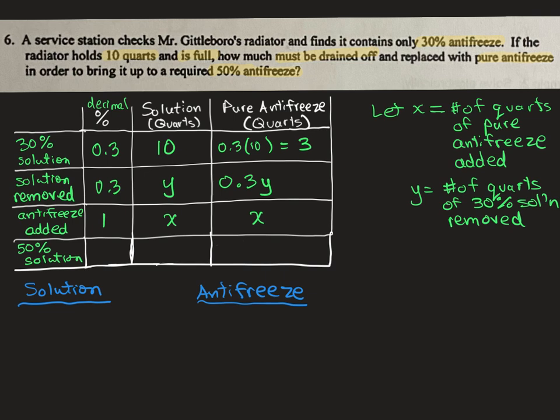Then finally, we're sitting at our 50% solution after we added that antifreeze. So the percent would be 0.5. And the solution, the amount or quarts of solution would be 10, because that's what we designed it to be, right? We're adding it to get it back to 10 quarts. And then the portion of pure antifreeze would be, since it's 50%, 0.5 times 10, which gives us five quarts of antifreeze in there. So there's our table.